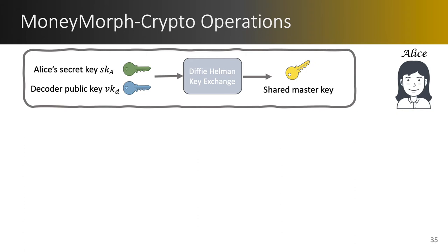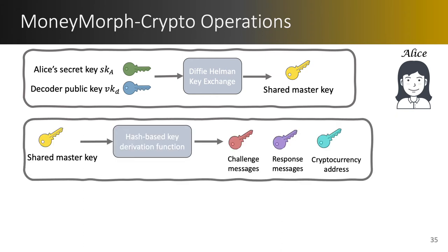We know that this key exchange is non-interactive and before receiving the challenge cover text the decoder does not even know that Alice has performed this key exchange. Then, using a hash-based key derivation function, three other keys are derived: one symmetric key for encrypting and decrypting the challenge message, one for encrypting and decrypting the response message, and a final key that serves as the public key of a cryptocurrency address, which we will see in action later.